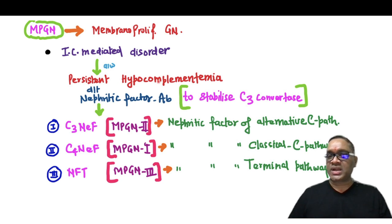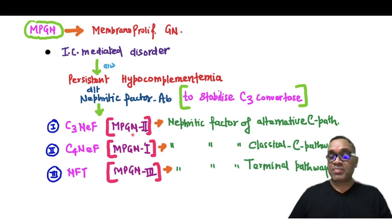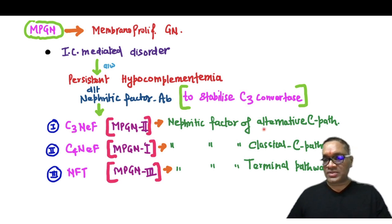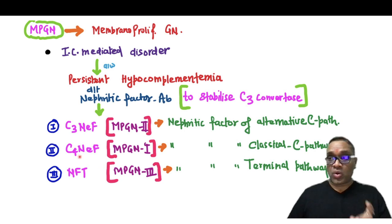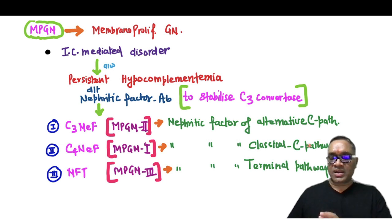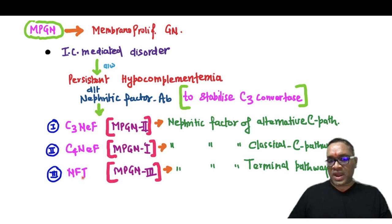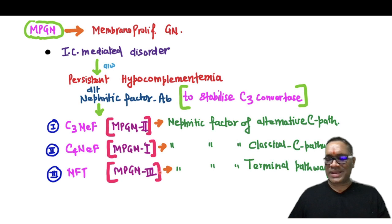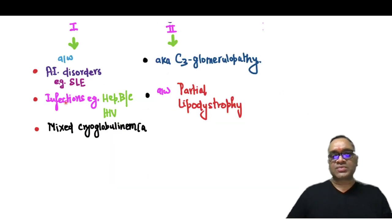There are three types of nephritic factor antibodies. C3 nephritic factor is seen in MPGN type 2, associated with alternative complement pathway activation. C4 nephritic factor is associated with MPGN type 1, linked to both classical and alternative pathways. There is also a nephritic factor for the terminal pathway, seen in MPGN type 3, which is a very rare type.